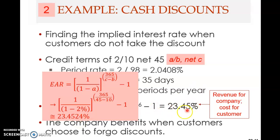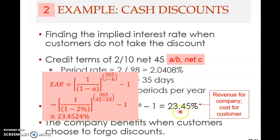What does this mean? This 23.45% is actually the revenue for the company that offers this credit term. And it is a cost for the customer — the buyer. If you are buying from the supplier and the supplier offers you this trade credit, and if you take this credit, you are incurring this cost. But for the company that offers the credit, this is the return they get — 23.45% per year effective rate.